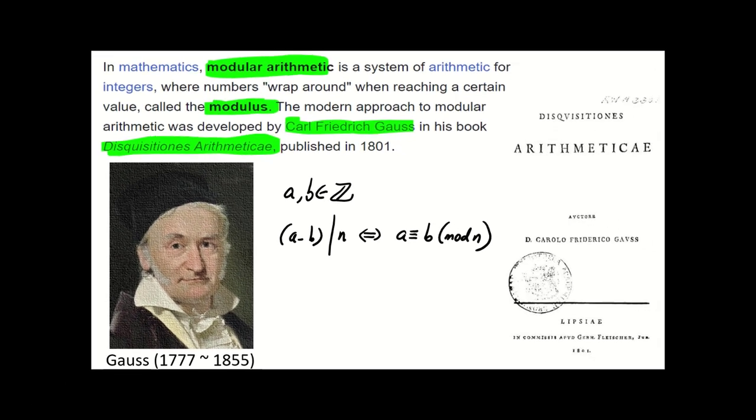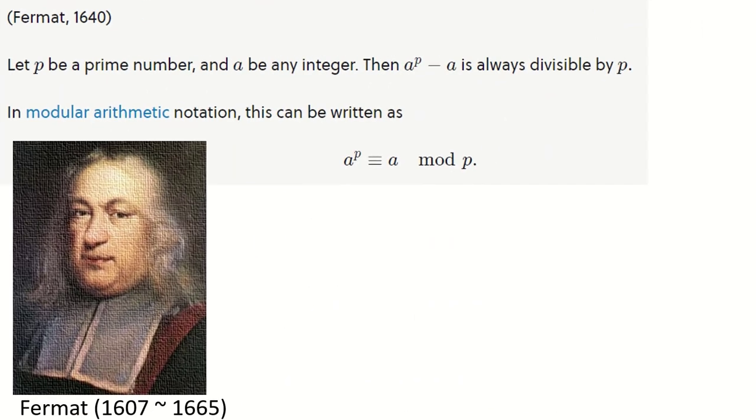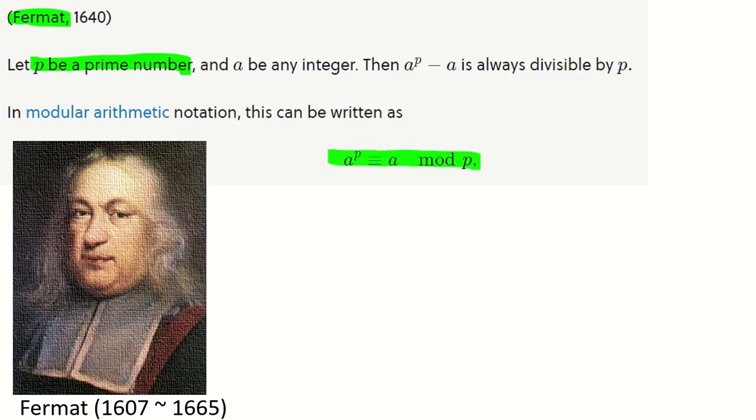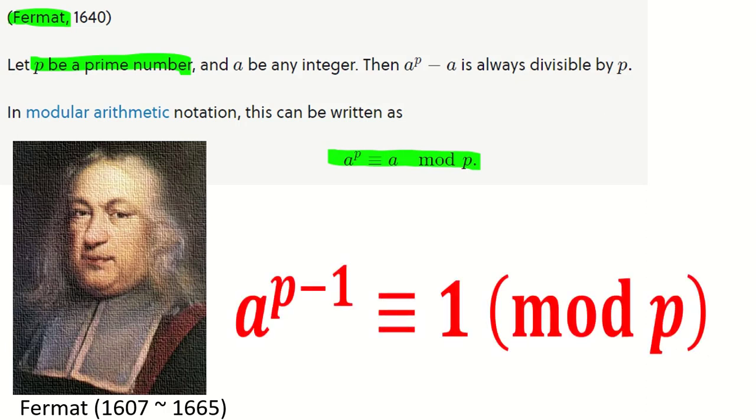There's one interesting and important theorem that we use for discussion: Fermat's Little Theorem. Let p be a prime number and a be any integer. Then a^p - a is always divisible by p. We can write this as a^p ≡ a (mod p), or we can even write as a^(p-1) ≡ 1 (mod p) if a and p are coprime.